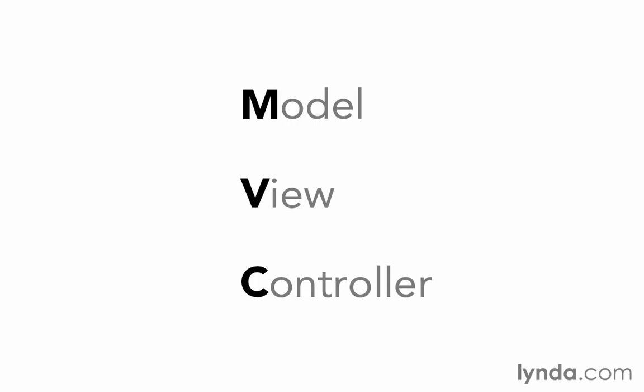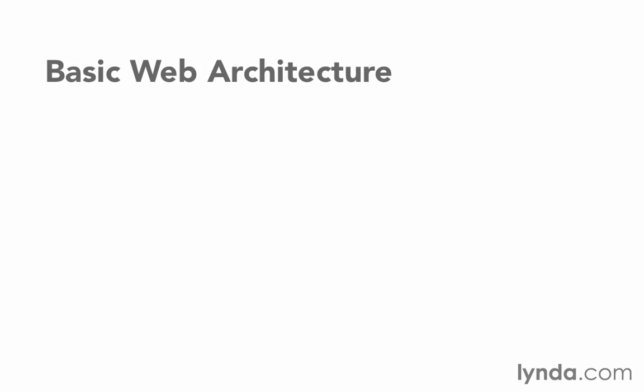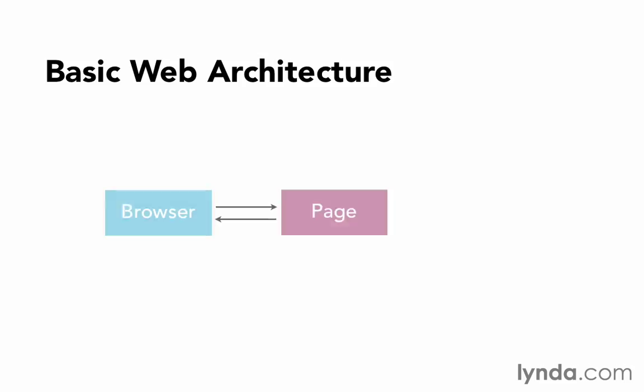Let's take a look at a couple of diagrams that I think will make this clearer. First, let's take a look at basic web architecture. This is a non-MVC architecture. We have a browser that interacts with a web page. Of course, there's a web server sitting in between them, but this is a simplified view. This web page might have lots of code that makes decisions and finally outputs something back to the browser.